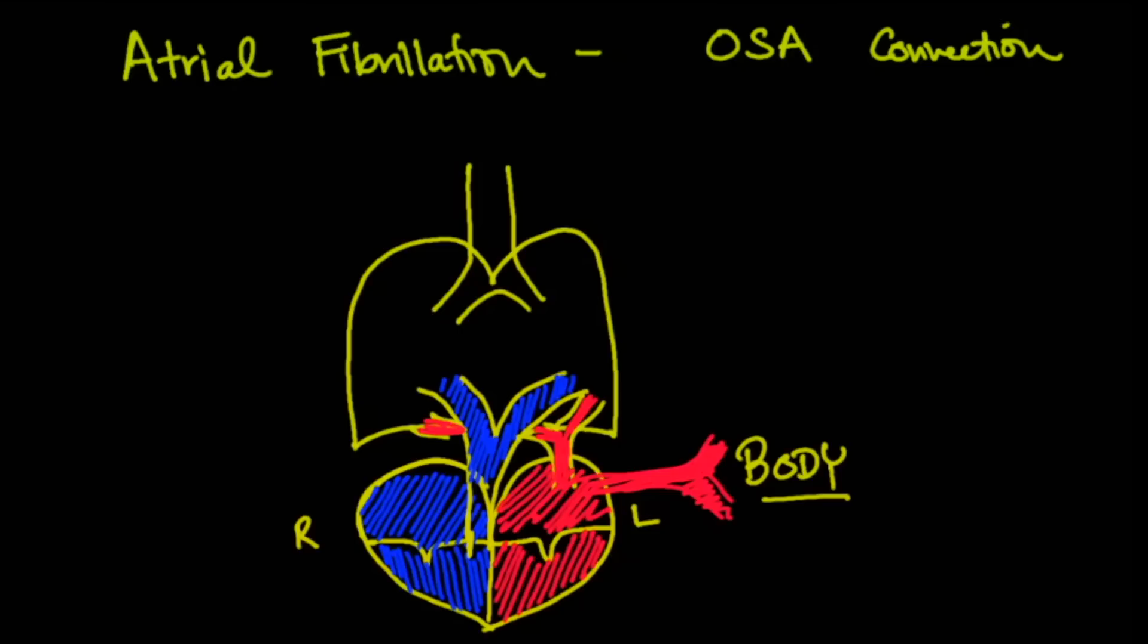So what atrial fibrillation is, is when the top part of the heart, which is the atria, is not contracting, but just simply wiggling around. The problem with that is that blood can coagulate there and get shot out as blood clots, either as a stroke where a blood clot goes to the brain or a blood clot goes to the lungs and it lodges there.